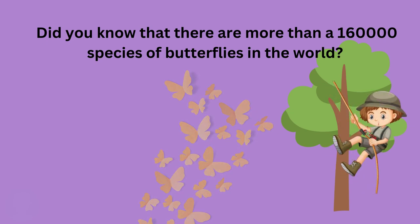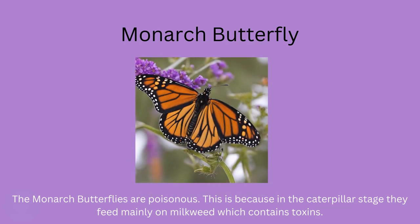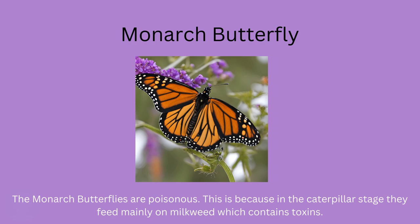Isn't that a lot? This right here is a monarch butterfly. Monarch butterflies are poisonous. Do you know why? This is because during the caterpillar stage, they feed mainly on plants called milkweed, which have toxins in them.